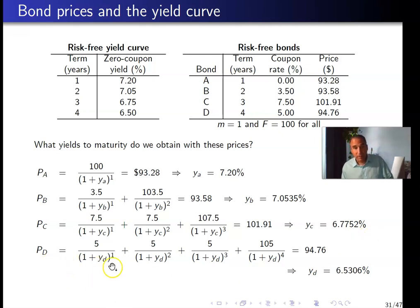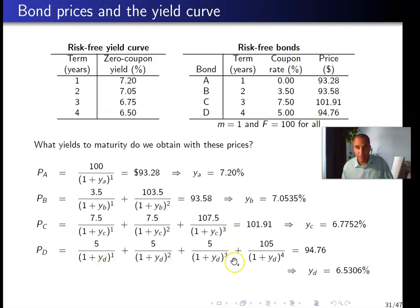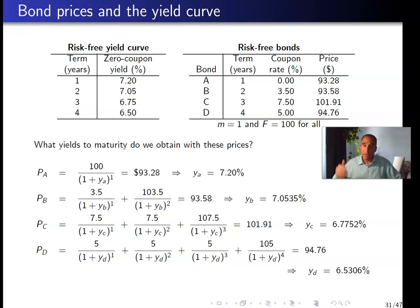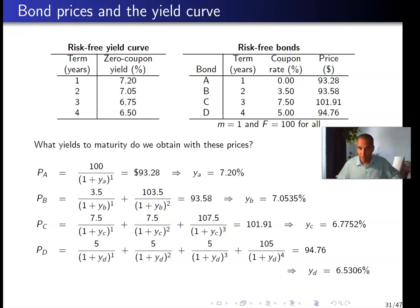For Bond D, if we discount every single payment with a unique annual rate, that rate must be 6.53%, meaning a bond trader buying D and holding it until maturity will realize an annual return of 6.53% over each of the next four years.